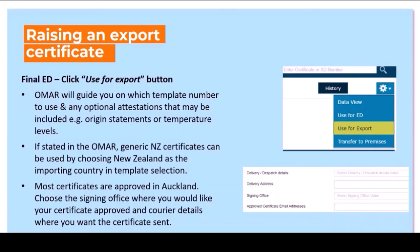Most certificates are approved at the Auckland Cert Unit at the airport, because that's where most products leave New Zealand from. In the middle of the export certificate page, after you put in the importer details and departure date, is the delivery dispatch details section. Here you choose how you want your certificate delivered, the address you want it sent to, and which signing office you want to use — so you can get certificates done in places other than Auckland. There's also an email address field that will notify the person entered when the certificate has been approved, though it won't send them a copy of the certificate itself.